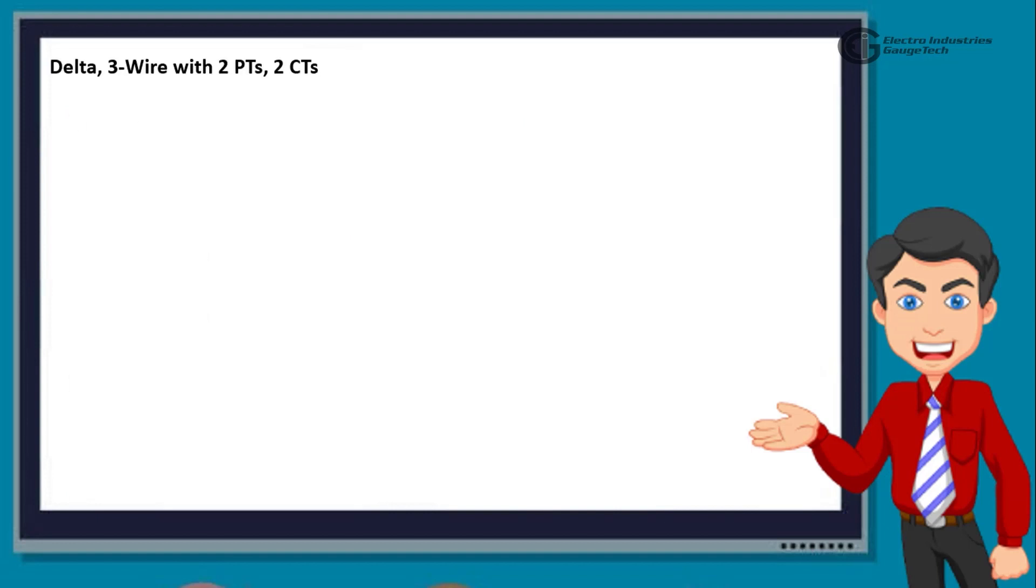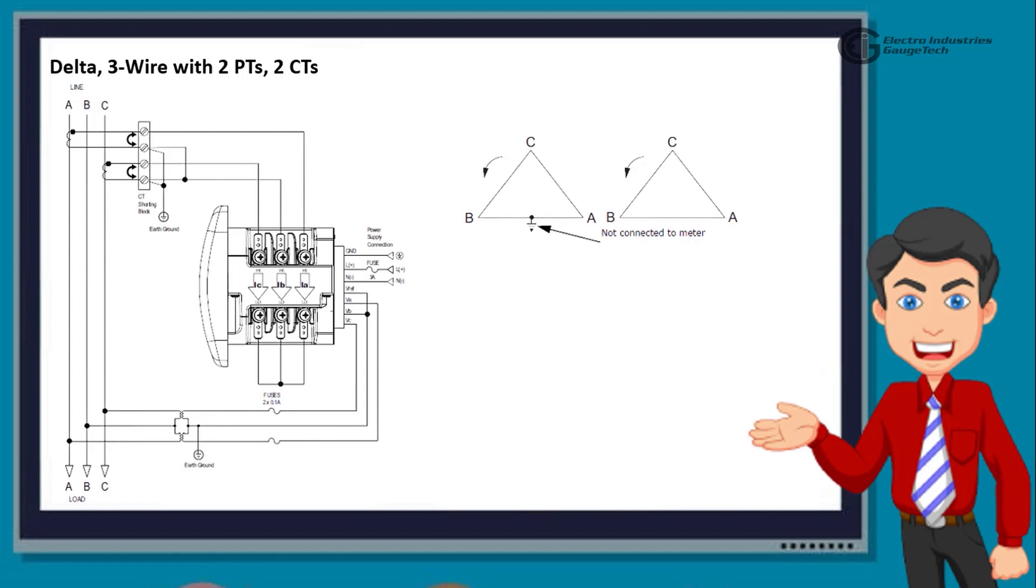Now, we have Delta, 3 wire with 2 PTs, 2 CTs. In this diagram, you will see the 3 phase, 3 wire Delta system with 2 potential and 2 current transformers. When using this wiring, select 2 CT-Delta from the Shark Meter's front panel display.